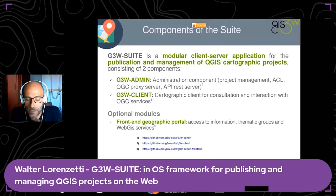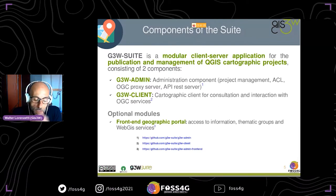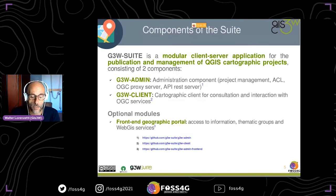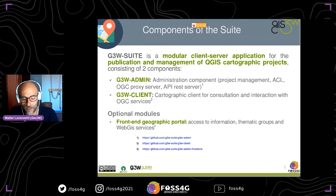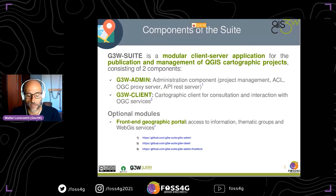G3W Suite is a modular client-server application made of two components: G3W Admin, the administration component, and G3W Client, the cartographic client for consultation and interaction with OGC services. There are other plugin modules — many are not free as they are for specific customers — but some are free, for example a front-end geographical portal, a simple classic geographic portal for searching and accessing web GIS services.